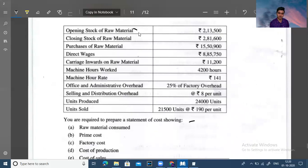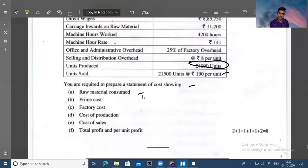For the following data relating to year ending 31st March 2017, we have all the data related to opening stock, closing stock of raw material, purchase, direct wages, carriage, machine hours worked, machine hour rate, office and administrative overhead, selling and distribution overhead, units produced, and units sold. You are required to prepare raw material consumed, prime cost, factory cost, cost of production, cost of sales, and total profit. This question is already discussed.